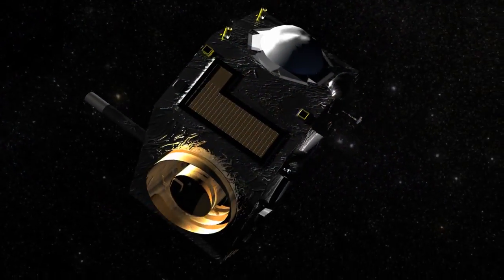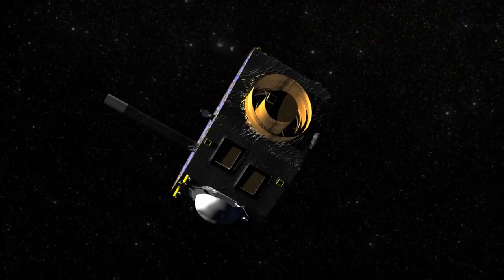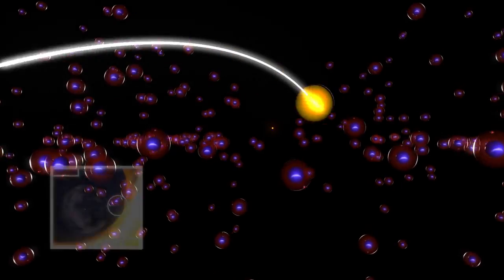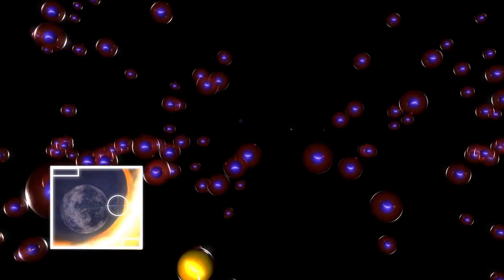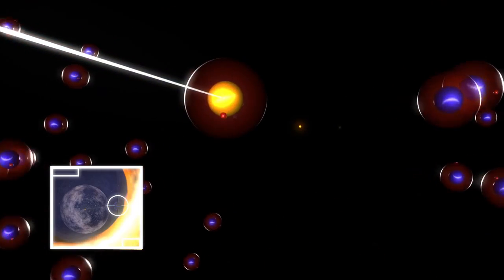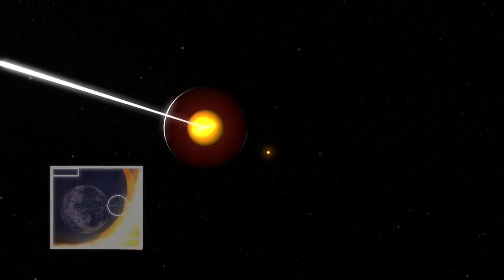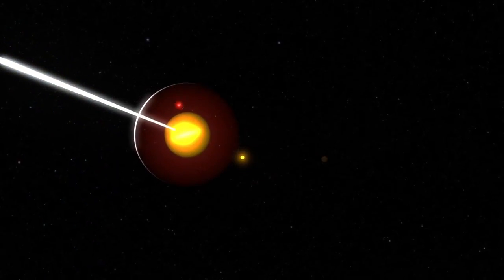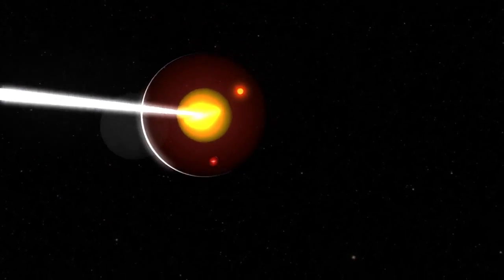IBEX can map such regions because it uses a technique called Energetic Neutral Atom Imaging. An energetic charged particle in the outer heliosphere hits a hydrogen atom, stealing its electron and becoming neutral. It then travels straight,